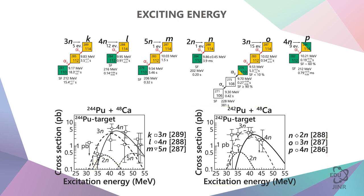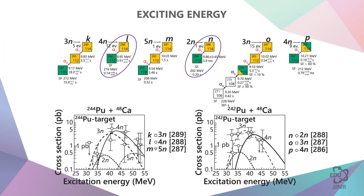Now let's pay attention to the fact that these two chains are exactly the same. But one was obtained with plutonium-244, and the other was obtained with plutonium-242. Now let's see where they are located.